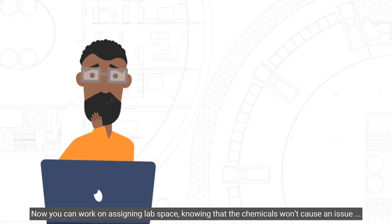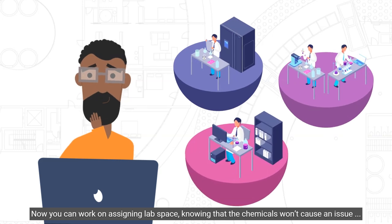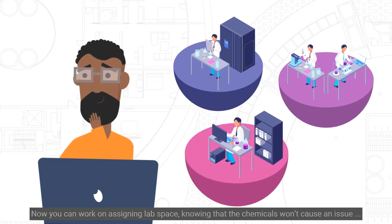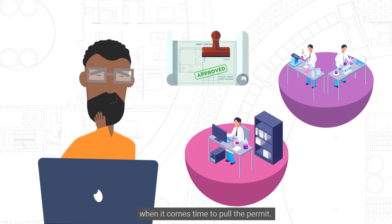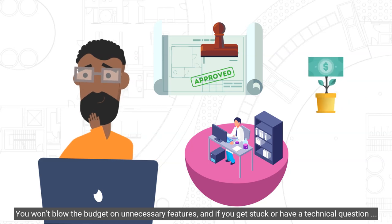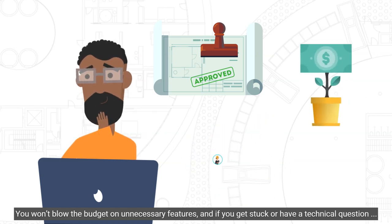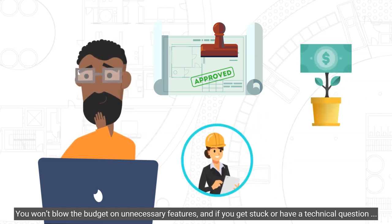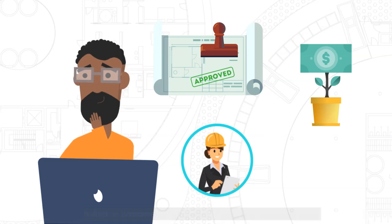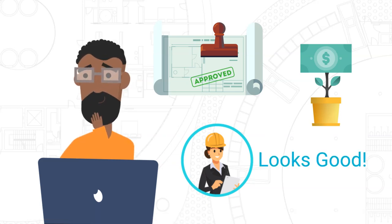Now you can work on assigning lab space knowing that the chemicals won't cause an issue when it comes time to pull the permit. You won't blow the budget on unnecessary features. And if you get stuck or have a technical question, you can always call a Jensen Hughes expert to help along the way.